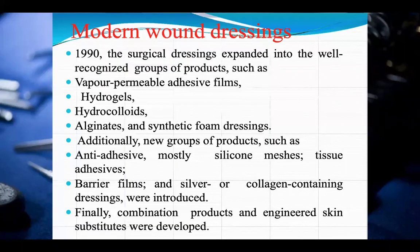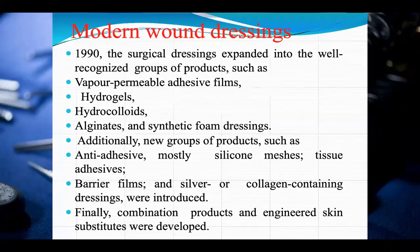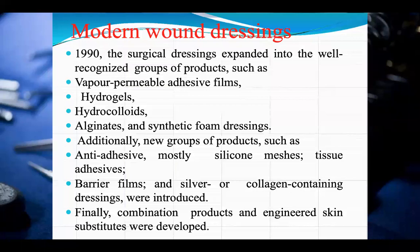Now we have modern wound dressings. In 1920, surgical dressings expanded into a well-recognized group of products such as vapor-permeable adhesive films, hydrogels, hydrocolloids, alginates, and synthetic foam dressings. Additionally, new groups such as anti-adhesives — mostly silicone meshes — tissue adhesives, barrier films, and silver or collagen-containing dressings were introduced. Finally, combination products and engineered skin substitutes were developed.